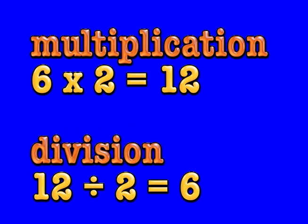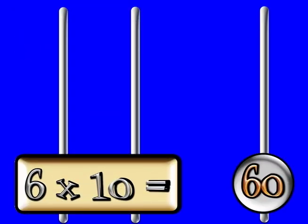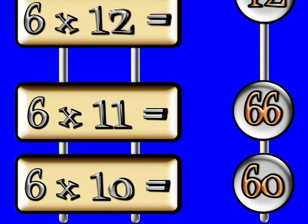When I multiply by 6, it goes a little bit like this. 6 times 10 is 60, times 11 is 66, 6 times 12 is 72.